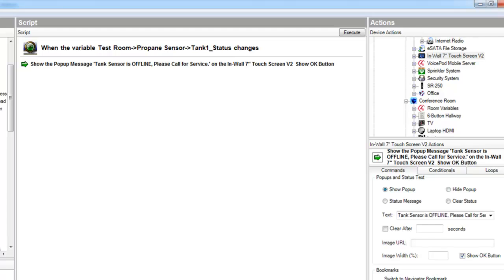In this example, we have used the Tank 1 status to show a pop-up if the tank sensor goes offline.